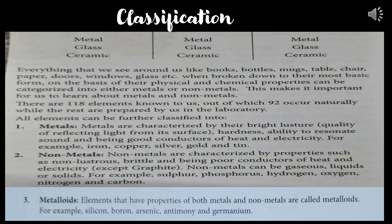All elements in our periodic table can be metals, metalloids, or nonmetals. The total known elements on Earth so far is 118. Out of these 118, 92 occur naturally, while the rest are prepared by us in laboratories by mixing chemicals.